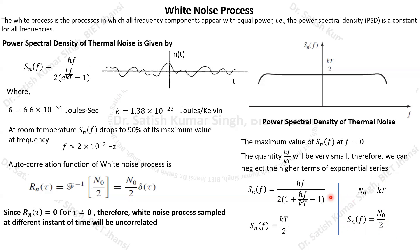We'll stop this discussion of the white noise process here. In the next video, I will explain what happens when we pass a white noise process through different kinds of filters — band-pass, low-pass, and high-pass filters — and what power content is available in each case. Thank you for watching; if you have any doubts, let me know in the comments.